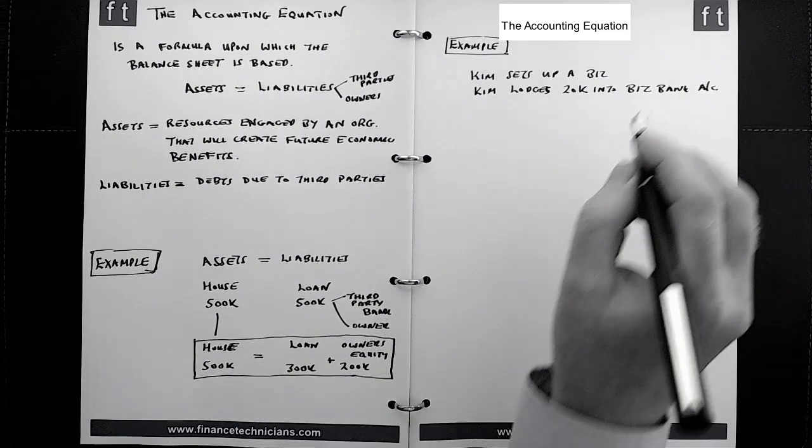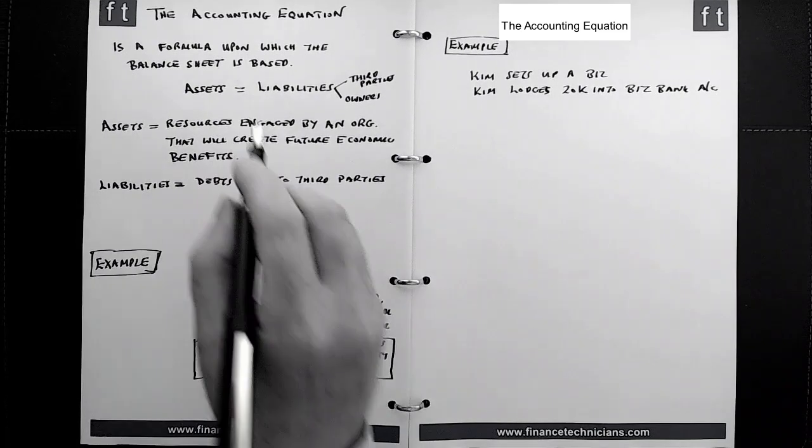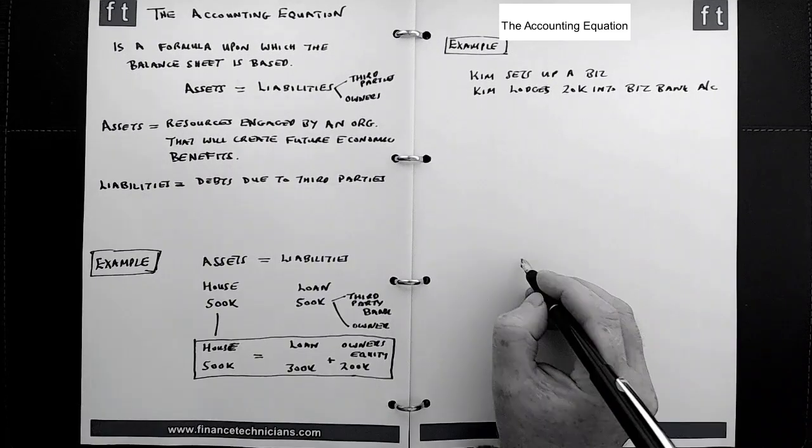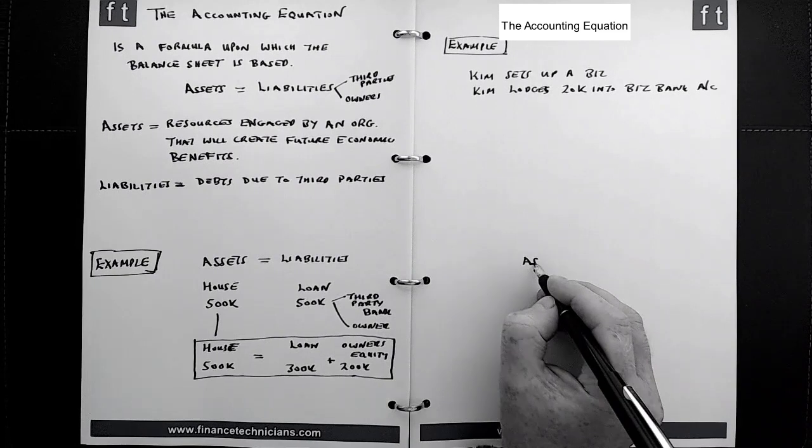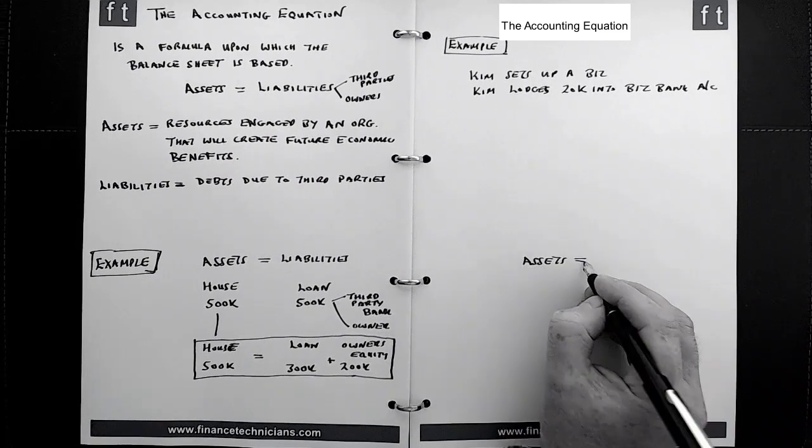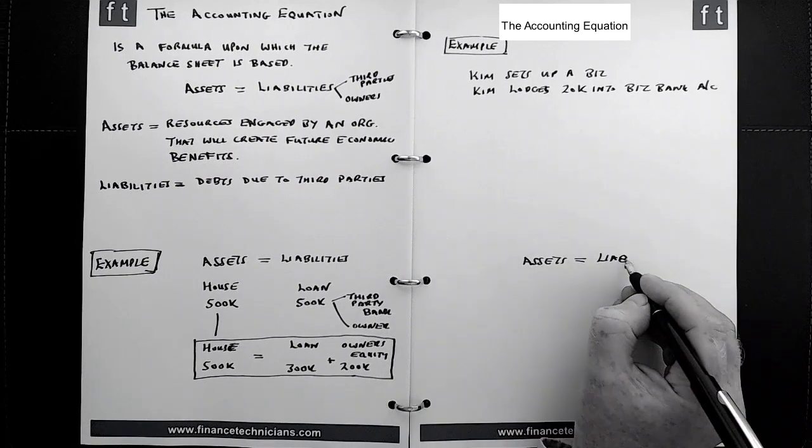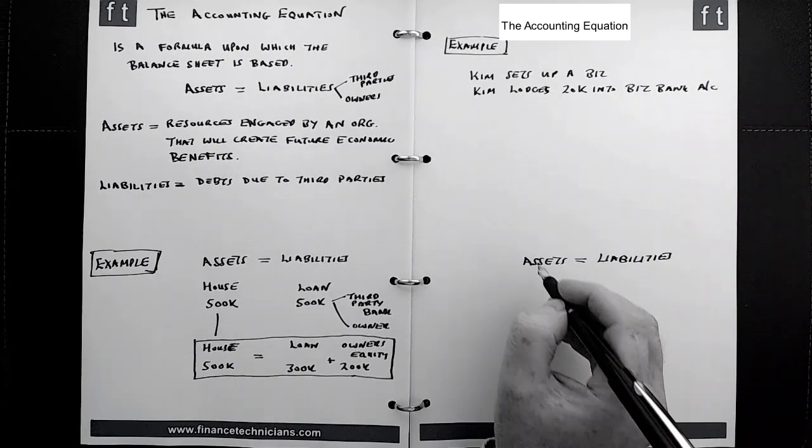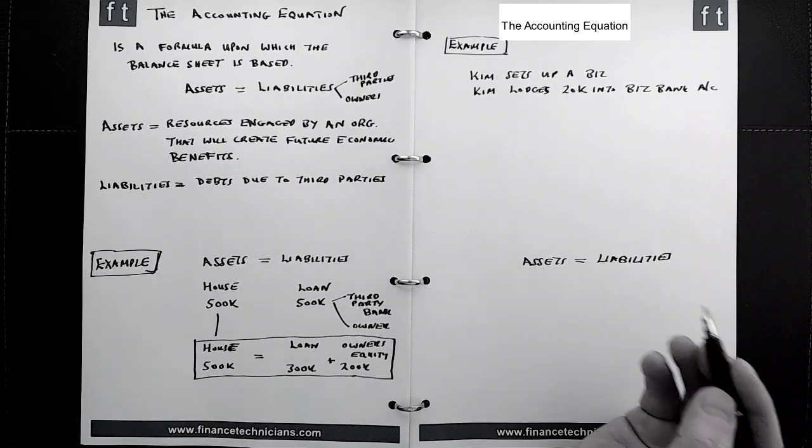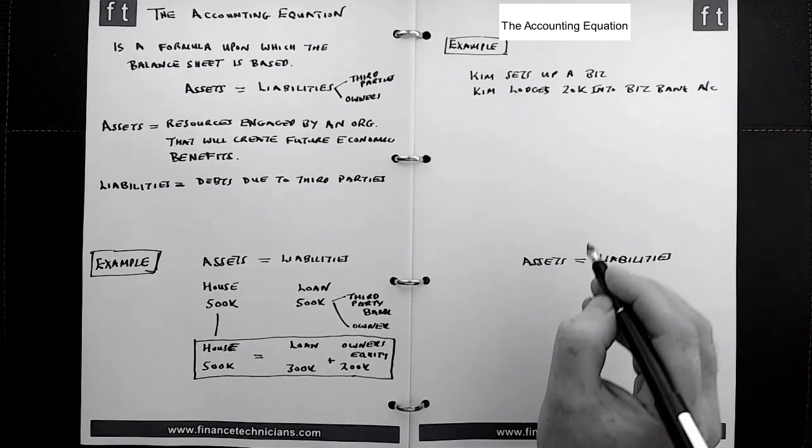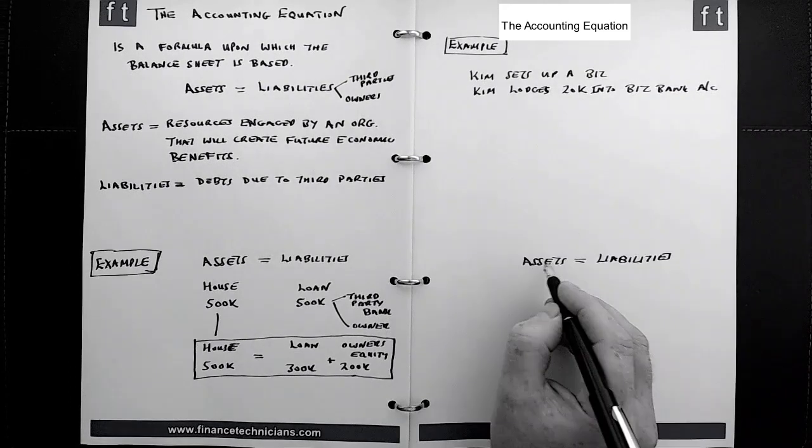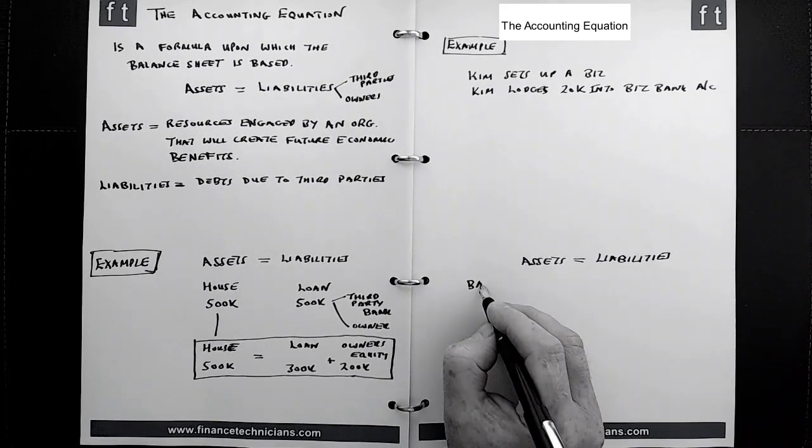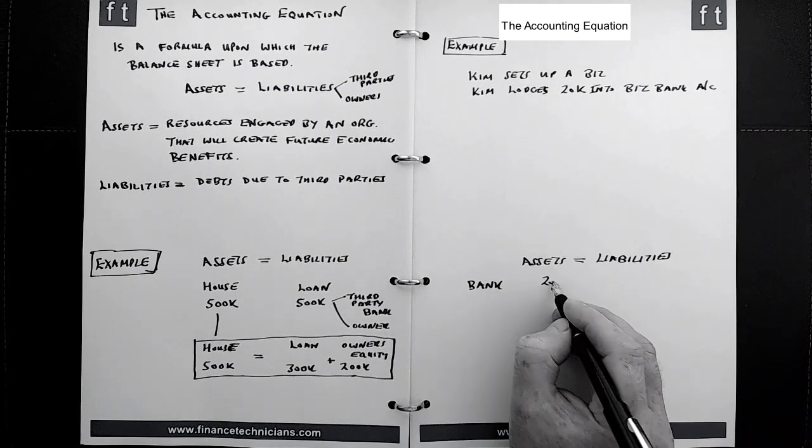And what we need to do is reflect this in the assets equal liabilities, the accounting equation formula. So we just go down here and we put down here assets equals liabilities, and we need to take this information here and populate the formula itself.